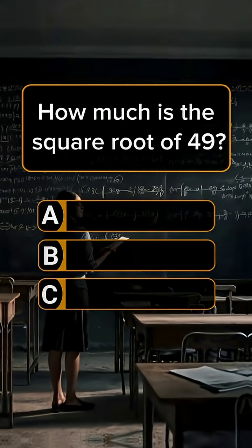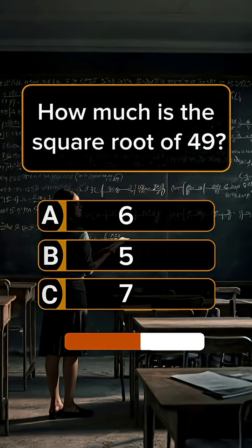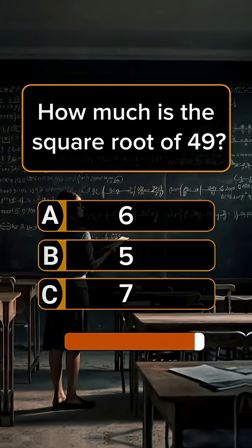Question 5. How much is the square root of 49? Answer C, 7.